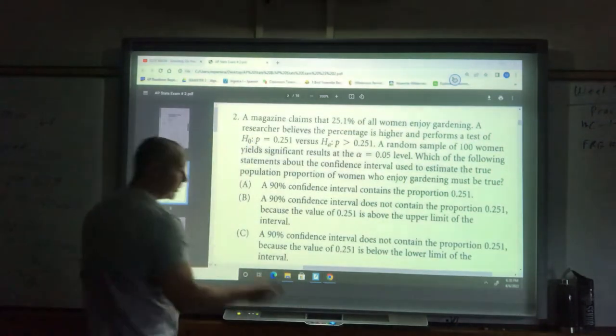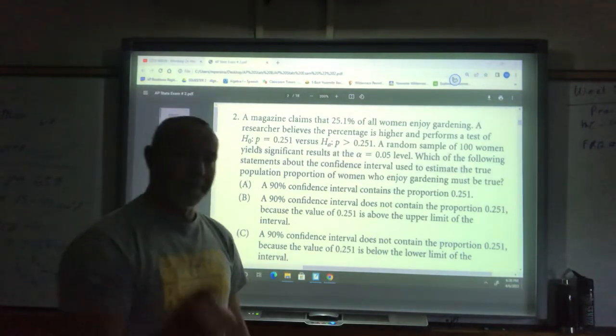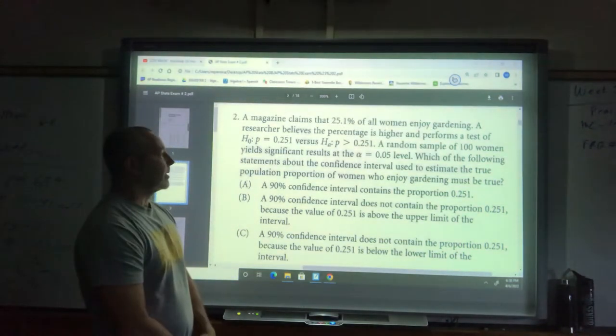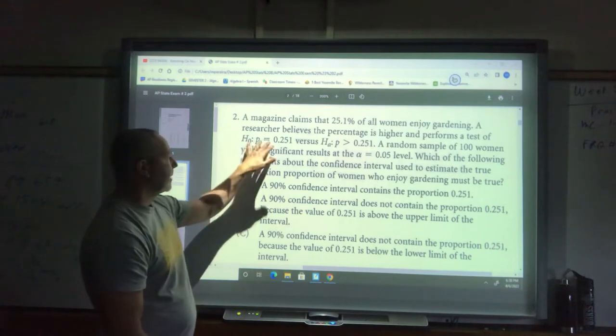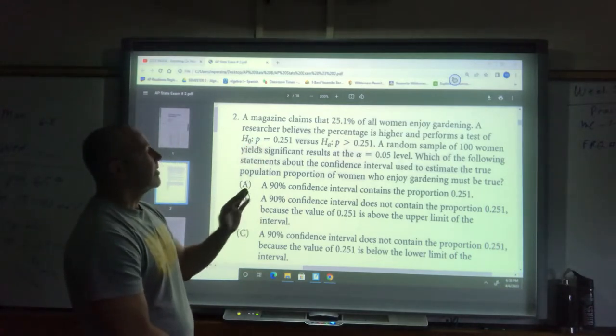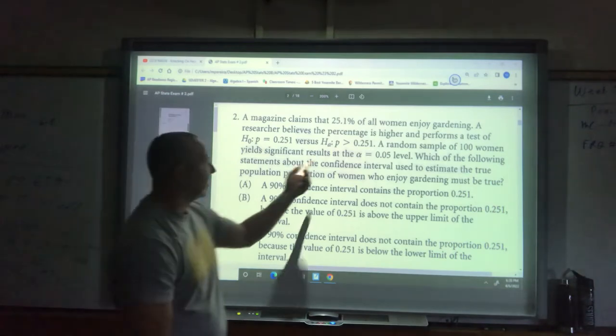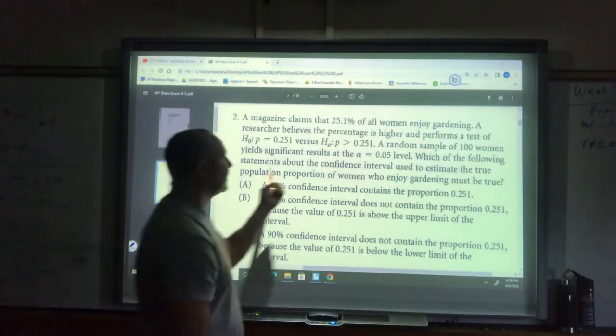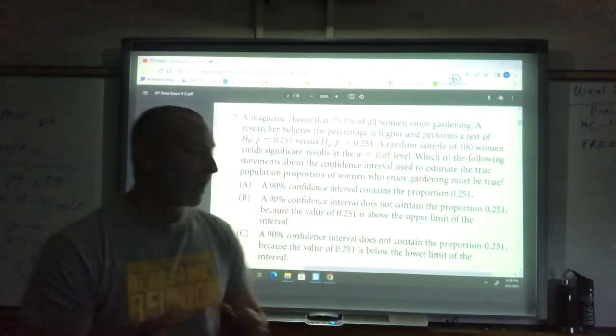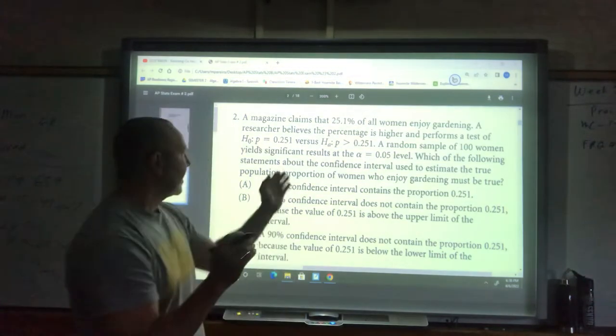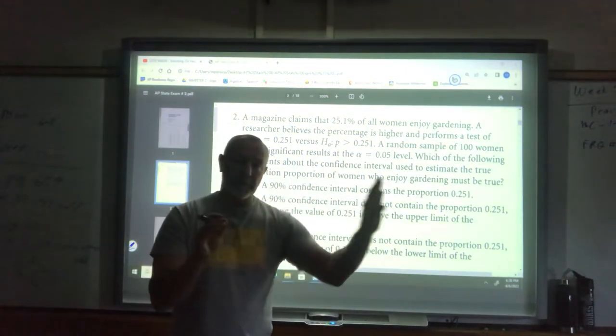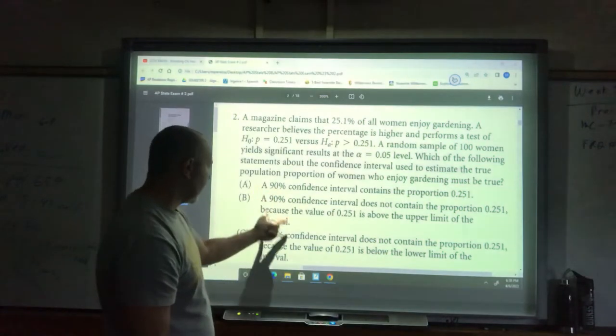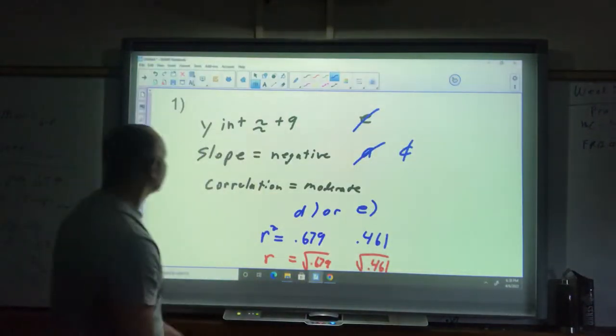Number two, I feel like number two is difficult. On ones that are difficult, don't feel bad that you don't get it. This is a hard one. The magazine claims 25.1% women enjoy gardening. That would mean I have null hypothesis. The researcher believes the percentage of gardening women is higher, so the proportion is greater than 0.251. They have a random sample of 100 women, and it yields significant results at the 0.05 level. Significant results. We're thinking it's higher, so that would be a one-tailed test. Significant results would mean that my results were out there on the end. They're talking about confidence intervals, so I'm going to go to my smart board.